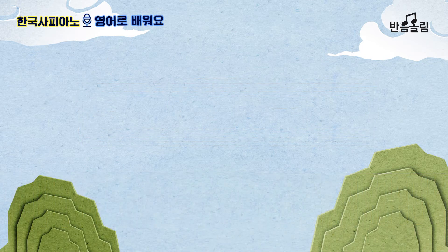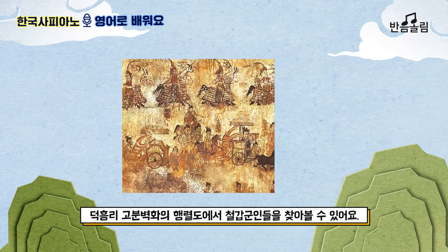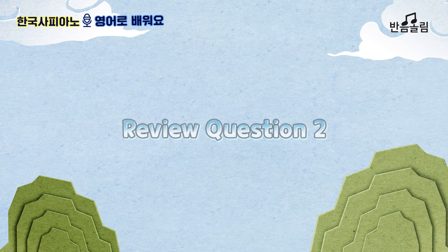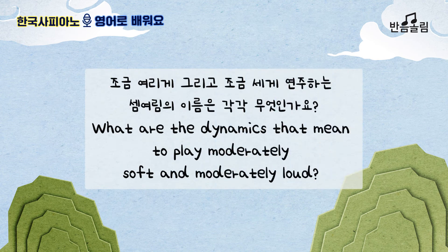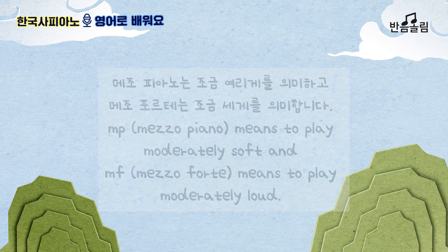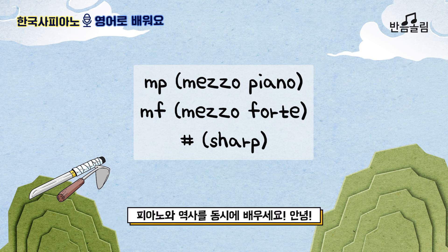Terrific! Review question number one: how do we know people used iron in Goguryeo's time period? We could see people wearing armor through the Deokheung-ri ancient mural. Number two: what are the dynamics that mean to play moderately soft and moderately loud? Mezzo Piano means to play moderately soft and Mezzo Forte means to play moderately loud. Awesome — we learned a new music symbol and dynamics. Let's remember what we learned today and play the piano one more time. We learned history and piano together. Take care!